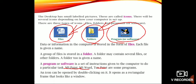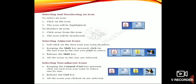An icon can be opened by double-clicking on it. It opens as a rectangular frame that looks like a window. To select an icon, click on it — the icon will be highlighted. If you double-click, the folder opens. To select, just single-click on the icon.